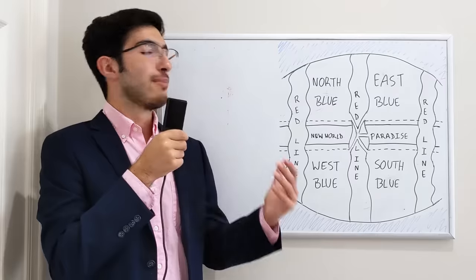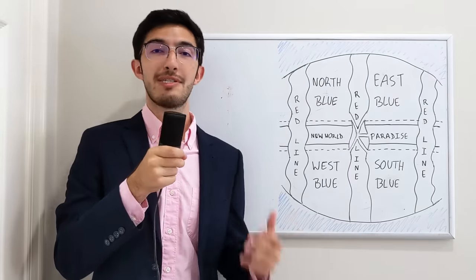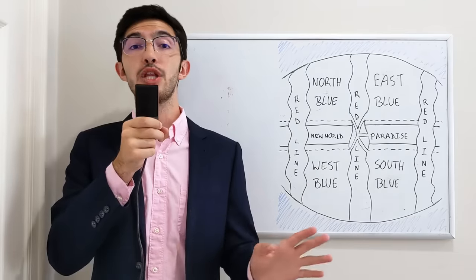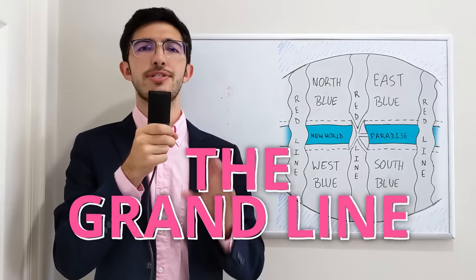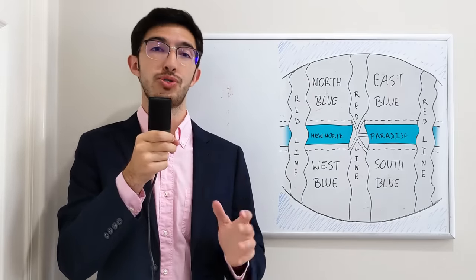So, once again, another similarity to the real-world that we can find in the world of One Piece, the calm belt and the doldrums. Okay, now that we've got everything else out of the way, let's talk about the Grand Line, which is, of course, the stretch of ocean that we have seen the most of in One Piece.